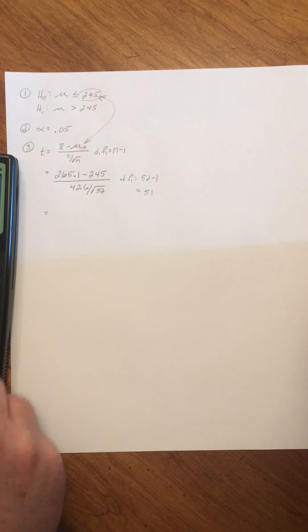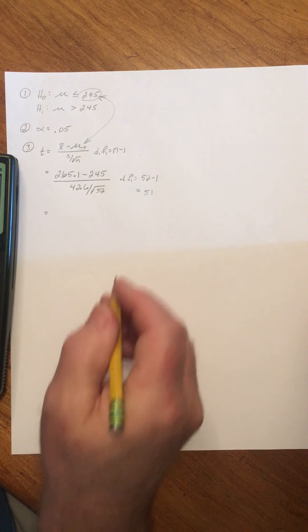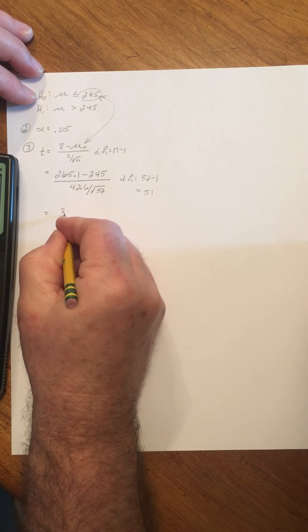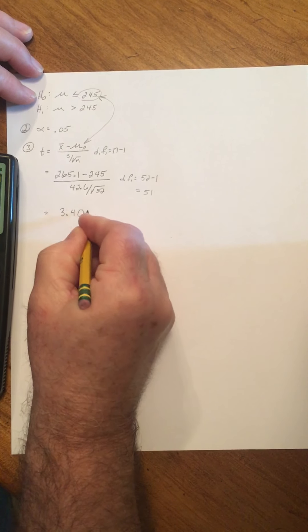Divide by the square root of 52. And my number is 3.402.